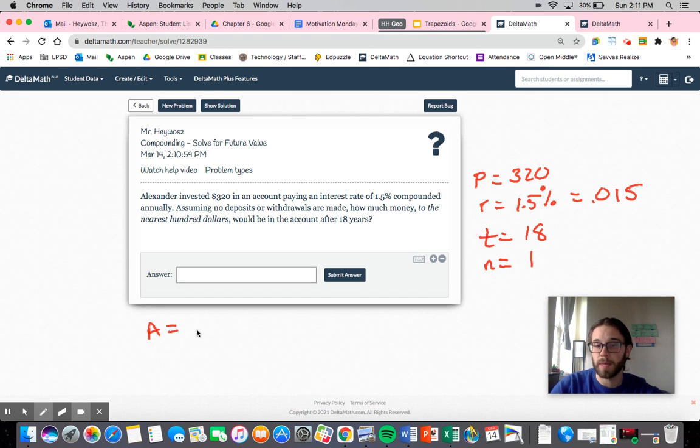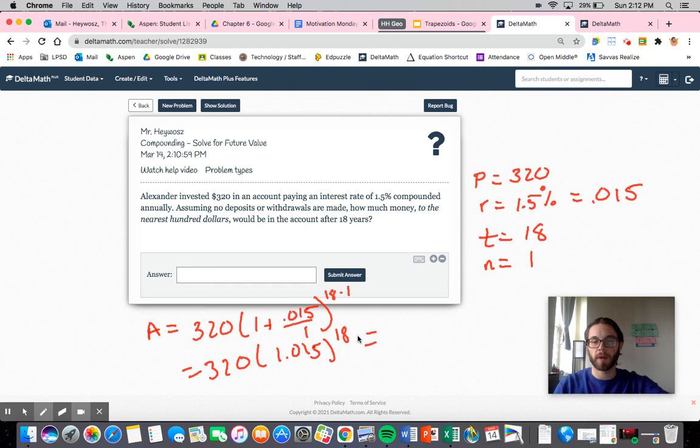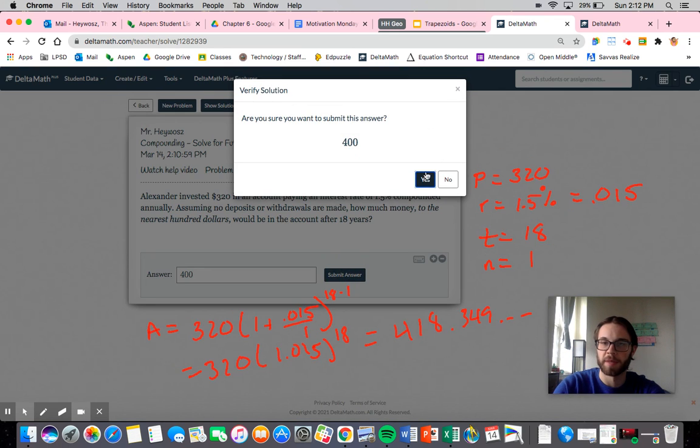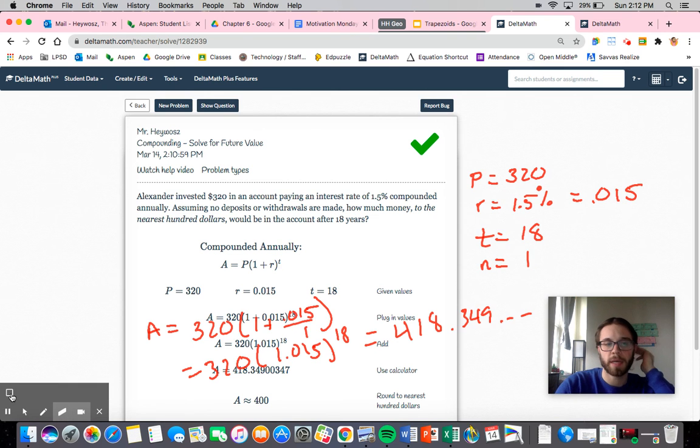My amount at the end is going to be equal to my 320 times 1 plus 0.015 divided by 1 raised to the 18 times 1. So that would be 320 times 1.015 raised to the 18, which when I plug that into the calculator would ultimately be $418.349. Now it wants us to round to the nearest $100, so it wants $400. Let me just make sure I rounded correctly and we are good. So let's just double check and go through it.